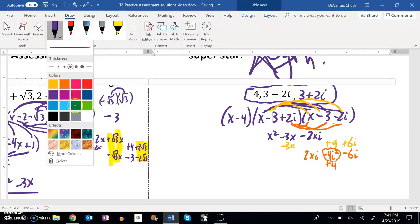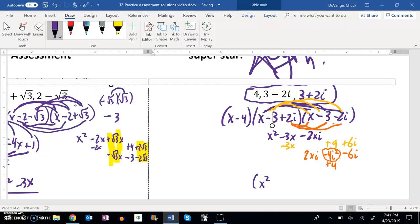All right. So then let's go ahead and combine up some like terms with this one. I've got my x squared. I've got negative 6x. This cancels out to a 0. This cancels out to a 0. And then I have 9 plus 4 is 13. All right. So, so far so good.